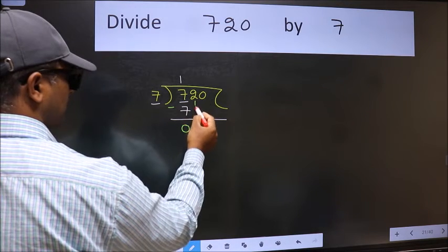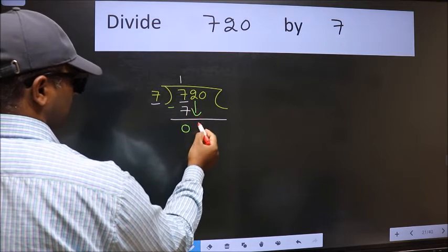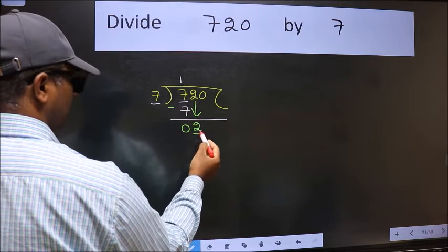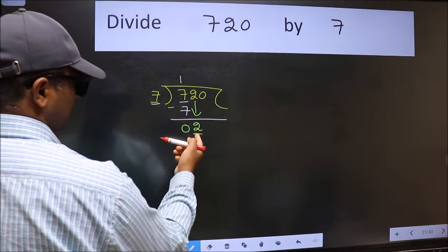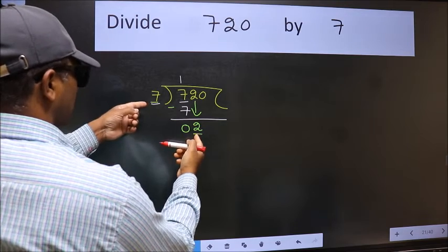After this, bring down the next number. So 2 comes down. Now here we have 2 and here 7. 2 is smaller than 7.